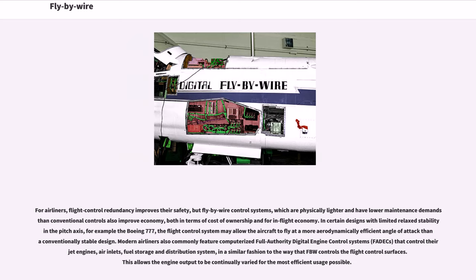For airliners, flight control redundancy improves safety, but fly-by-wire control systems, which are physically lighter and have lower maintenance demand than conventional controls, also improve economy in terms of cost of ownership and in-flight economy. In certain designs with limited relaxed stability in the pitch axis, such as the Boeing 777, the flight control system may allow the aircraft to fly at a more aerodynamically efficient angle of attack compared to a conventionally stable design.